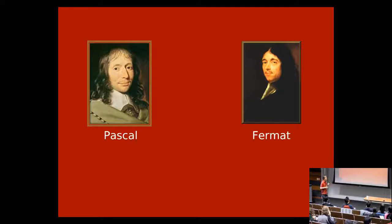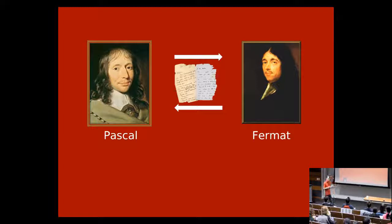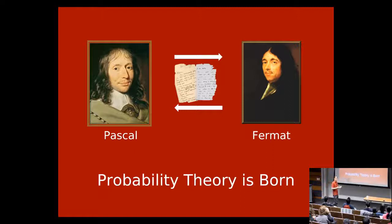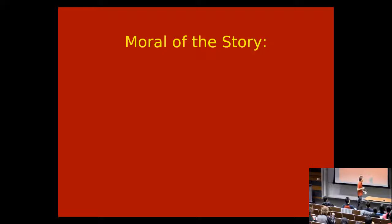He couldn't figure it out, so he talked to his friend Pascal, who was actually a really good mathematician. Pascal didn't talk to him directly, but corresponded with Fermat — actually a lawyer, but also a very good mathematician. They wrote a bunch of letters about these problems back and forth to one another, and this is literally when mathematicians first started to analyze probability theory, because of this other guy, Méré.